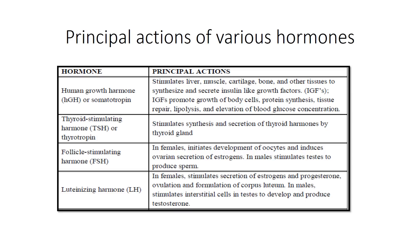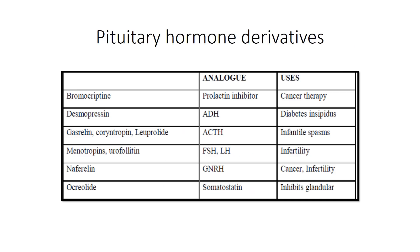For follicle stimulating hormone, in females it will initially cause development of the oocyte and then ovarian secretion. Based on the name you can understand what the principal action is going to be. This is an important chart.